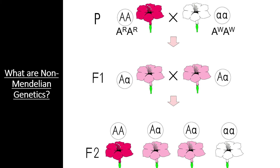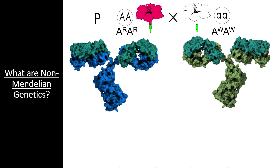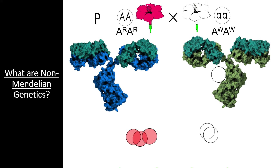Here is what is likely happening on the molecular level. Each allele produces a different variation of the same protein. The red allele's protein functions at the end of a complex pigment production pathway to convert a white pigment molecule into a red pigment molecule. The alternative white allele produces a non-functional protein which simply passes the white pigment through. When an organism carries both alleles, it produces both white and red pigment molecules in equal amounts, leading to a pink flower.